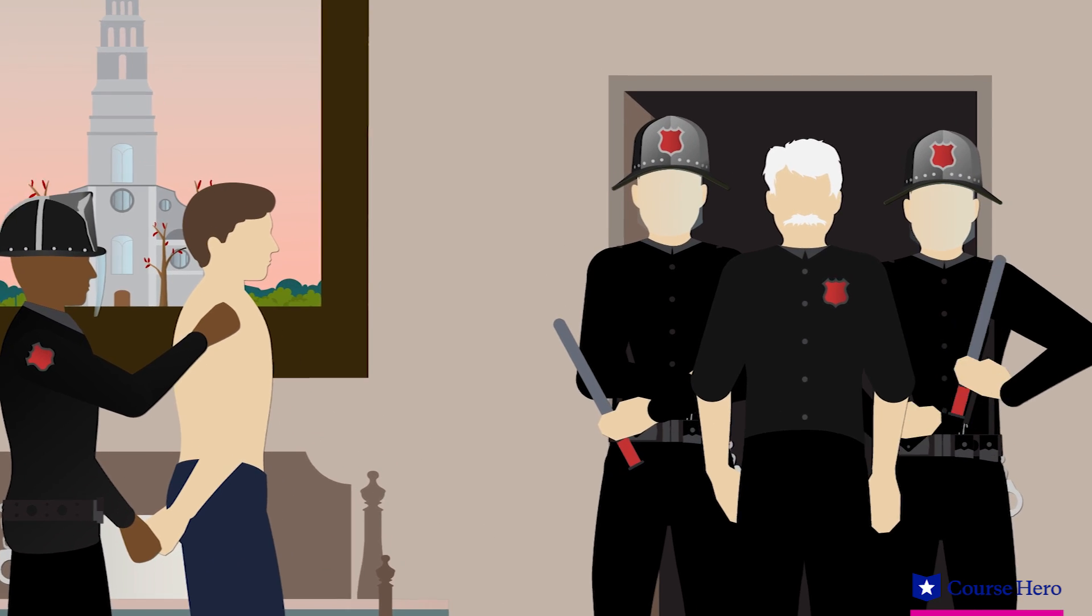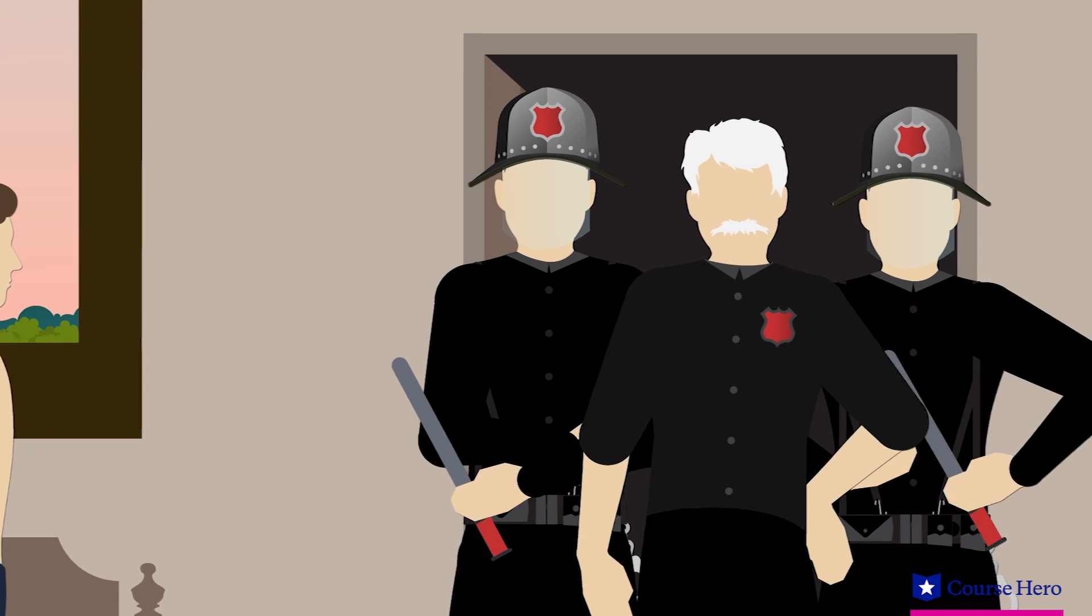But then, Mr. Charrington arrests Winston and Julia at their room. He and O'Brien have both been secret members of the Thought Police.